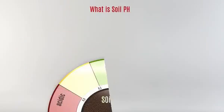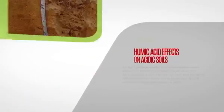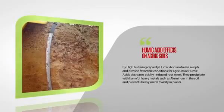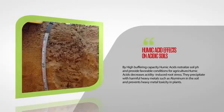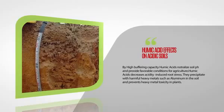What is soil pH? Soil pH affects many chemical and biological reactions. Humic acid effects on acidic soils: By high buffering capacity, humic acids neutralize soil pH and provide favorable conditions for agriculture. Humic acid decreases acidity-induced root stress and precipitates with harmful heavy metals such as aluminum in the soil, preventing heavy metal toxicity in plants.